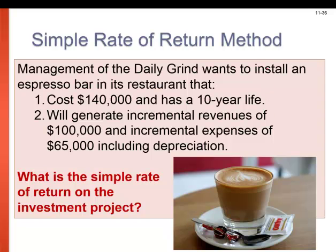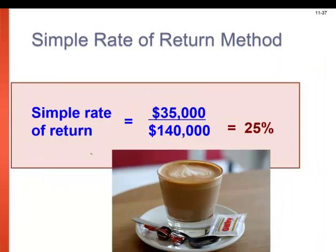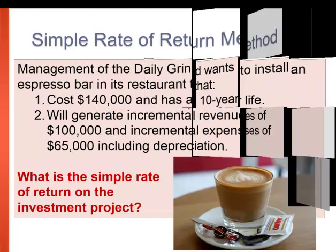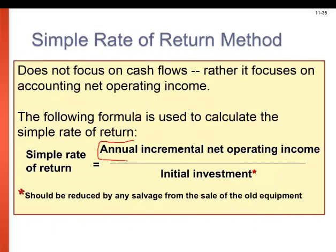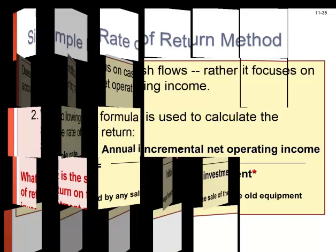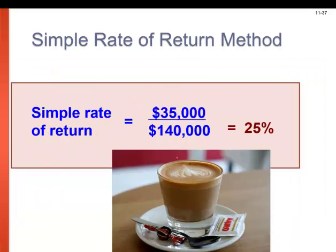In our example, management of the Daily Grind wants to install an espresso bar costing $140,000, with a useful life of 10 years. It's going to generate incremental revenues of $100,000 and incremental expenses of $65,000. Using our formula: annual incremental net operating income is revenues less expenses — that's $100,000 minus $65,000, giving us $35,000. Dividing by the initial investment of $140,000, we get a simple rate of return of 25%.